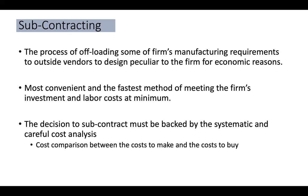Subcontracting is also a factor by which capacity can be increased — it is the process of offloading some of the firm's manufacturing requirements to outside vendors. It is the most convenient and fastest method of meeting the firm's requirements while minimizing investment and labor costs. However, the decision to subcontract must be backed by systematic and careful cost analysis — a make-or-buy analysis comparing the cost of making versus buying the product.